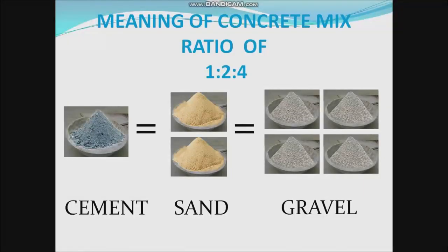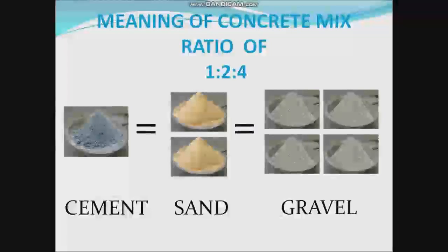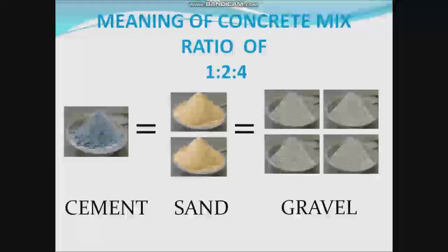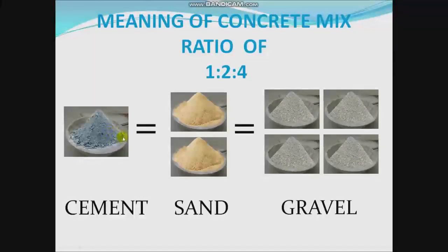When working with a mix ratio of 1:2:4, what it simply means is that for a concrete mix of 1:2:4, a specific volume of cement is needed, along with two times that volume for sand and four times that volume for the coarse aggregate. So if this is the volume of cement, you need two of it for the sand and four of that kind of volume for the coarse aggregate.